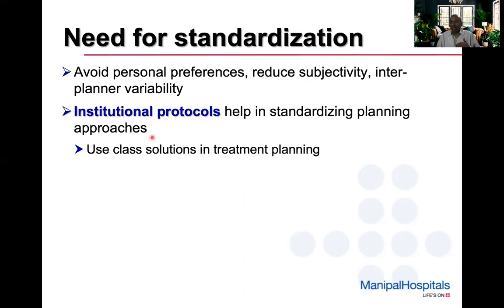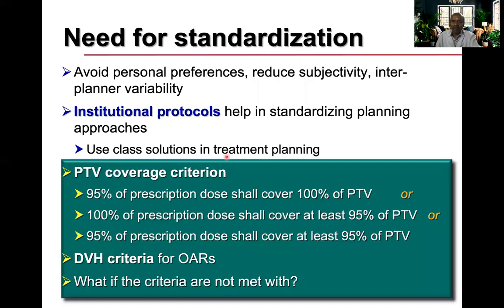Define institutional protocols that help standardize planning approaches — how we do planning for different patients and different sites. Try to use class solutions in treatment planning. The institutional protocols should specify criteria for PTV coverage: is it 95% of the prescription dose covering 100% of the PTV, or 100% of prescription dose covering at least 95% of PTV? DVH criteria for OARs should also be defined, along with what to do if criteria are not met.